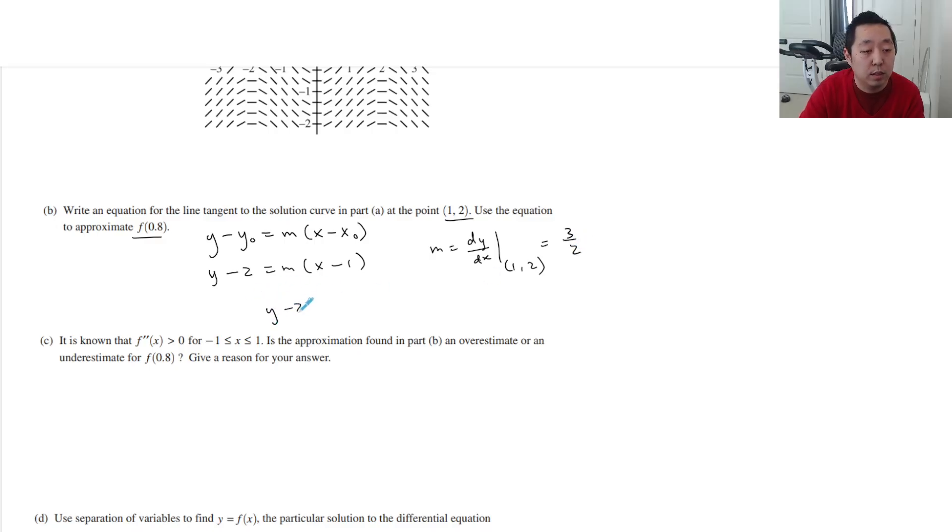So then you're going to say y minus 2 is equal to 3 halves x minus 1. And if you want to rearrange it, I don't distribute anything. I would just leave it like this. And that makes the math easier for the next part anyway, to leave it factored like that. It's totally fine to leave it like that. You do not have to distribute and put it in slope-intercept form. And then when x is 0.8, we would say y is 3 halves, 0.8 minus 1 plus 2. That's 3 halves times negative 0.2 plus 2. That's negative 0.3 plus 2, which is 1.7.